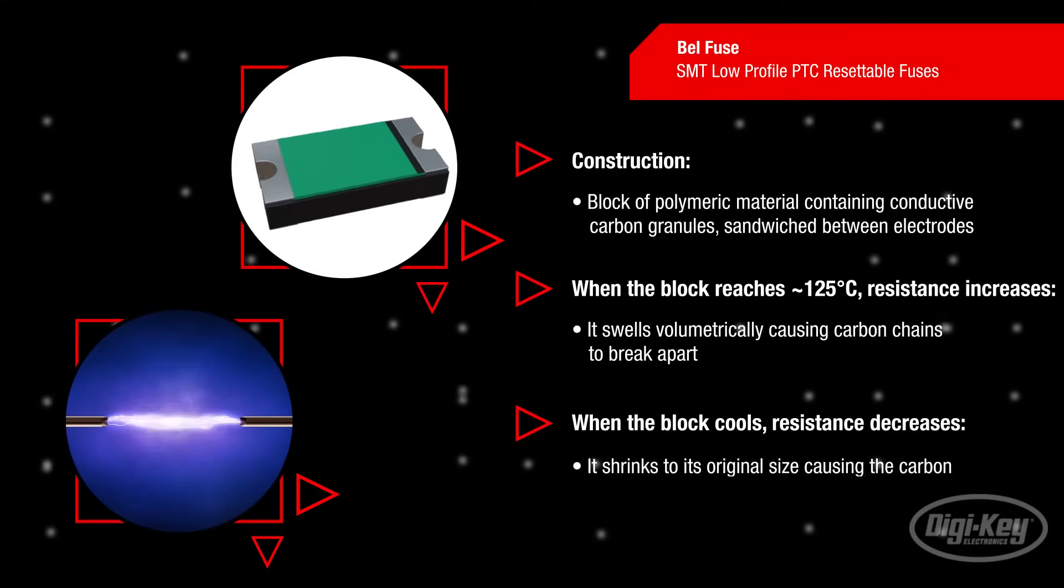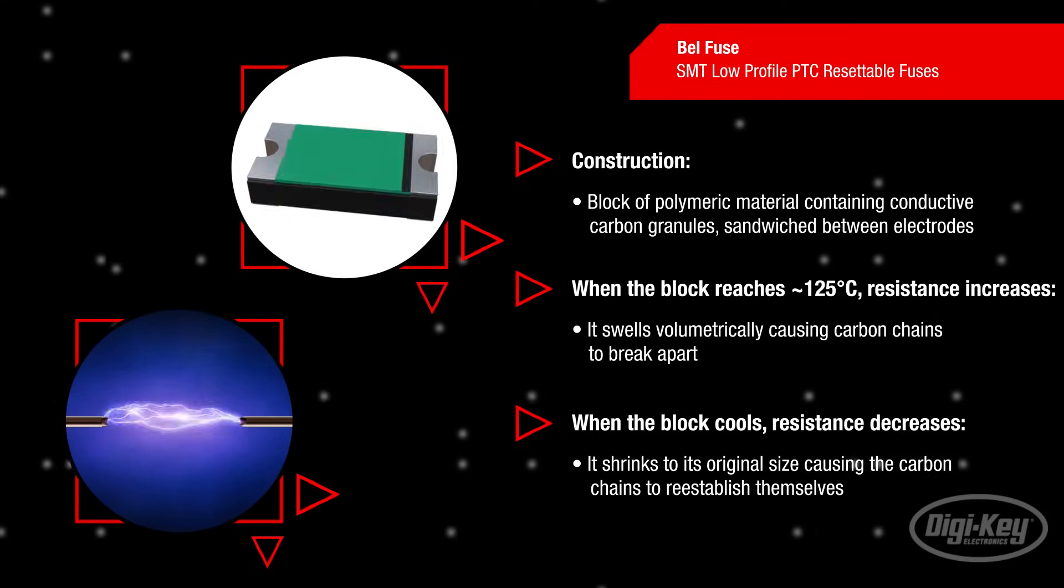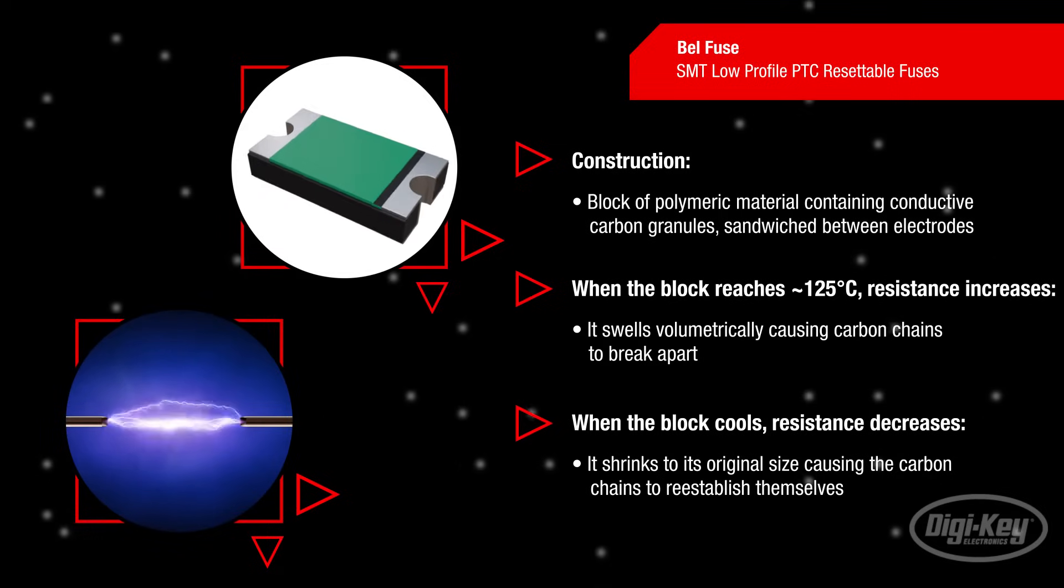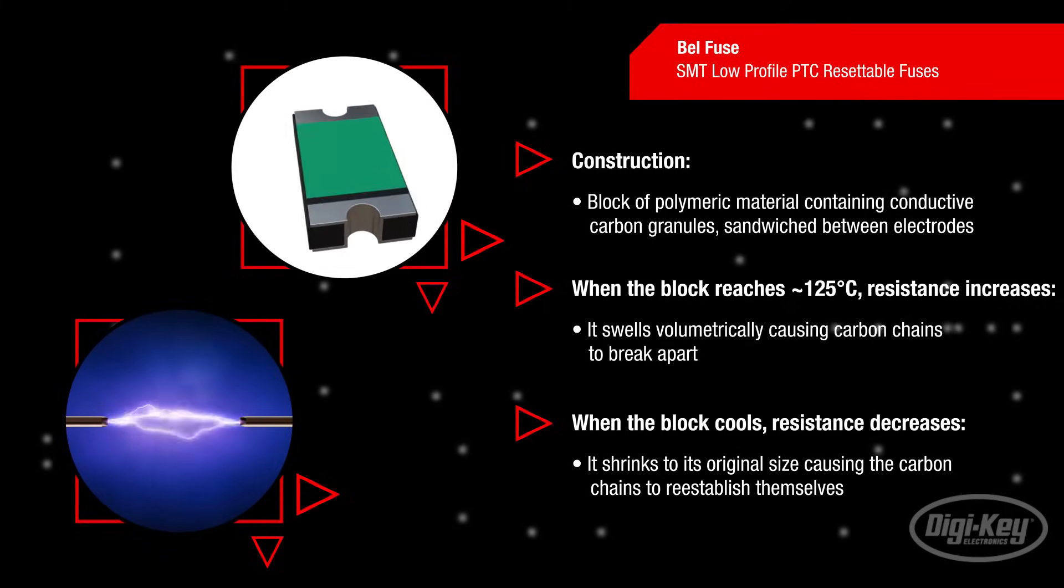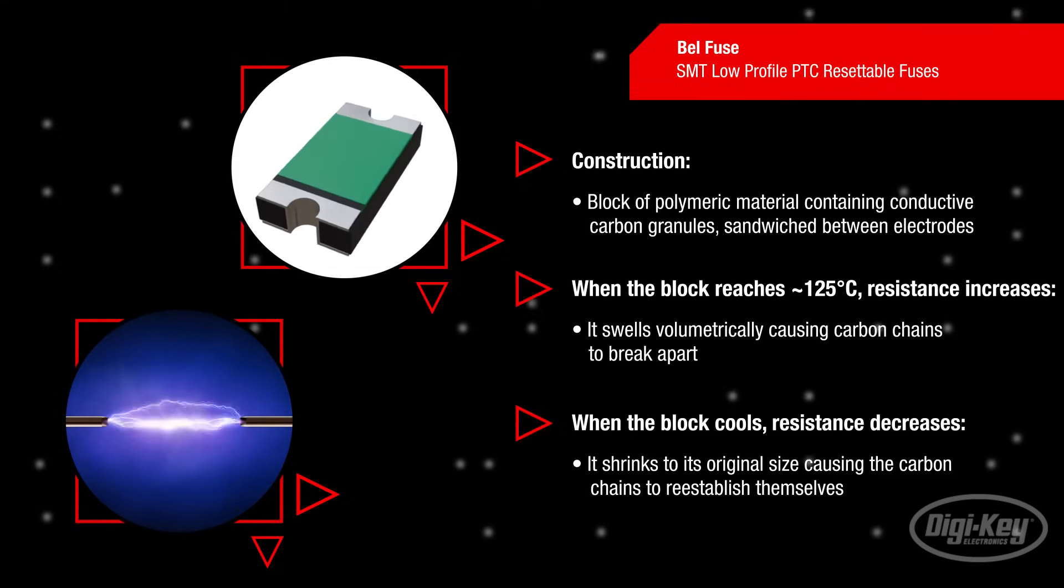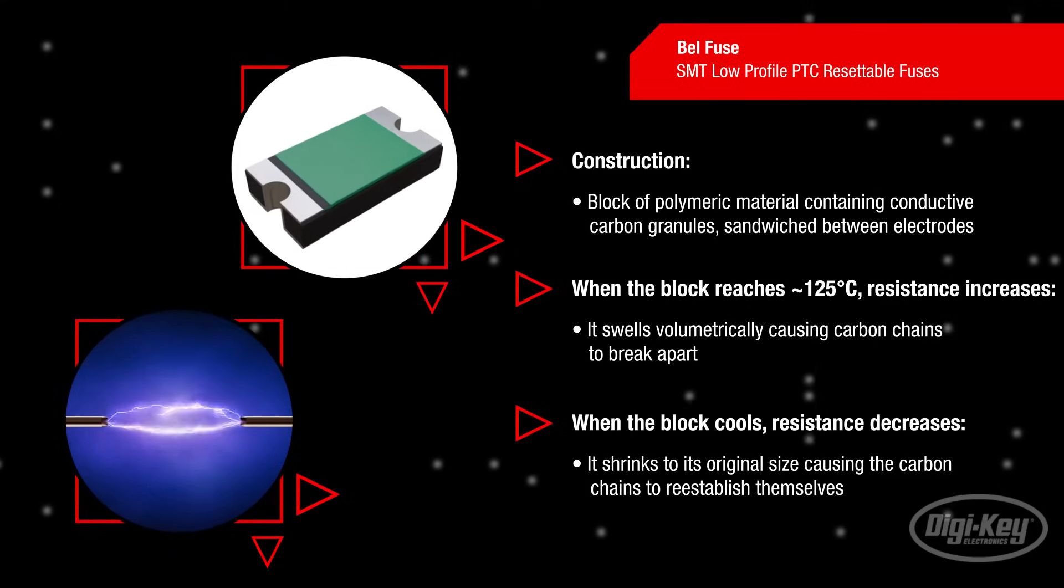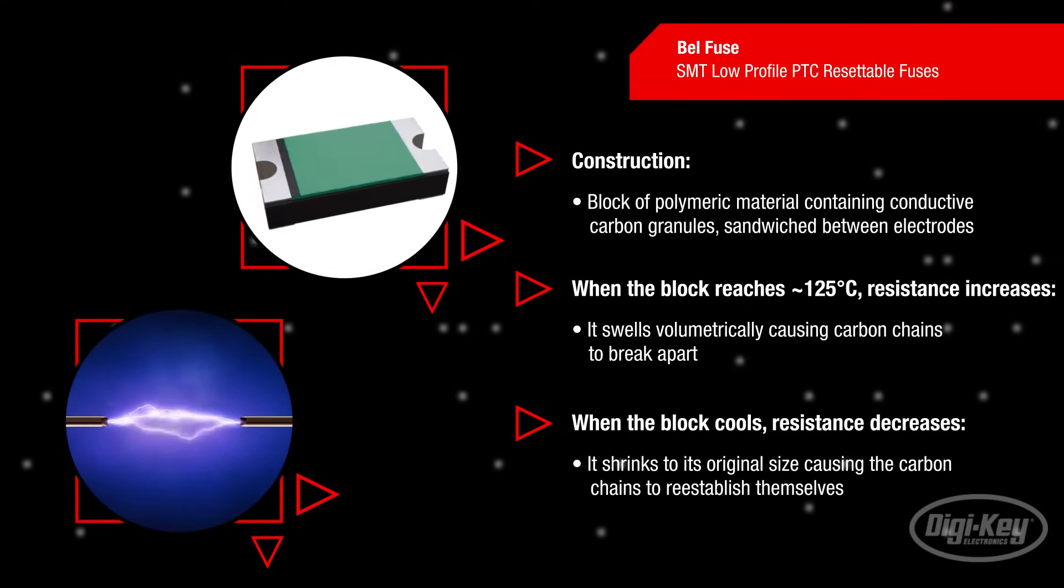Once this tripped state current is cut off, the polymer brick cools and shrinks to its original size, thereby allowing the broken carbon chains to re-establish themselves and permit the part to return to its low-resistant state. Once cooled to room ambient, the PTC will reset.